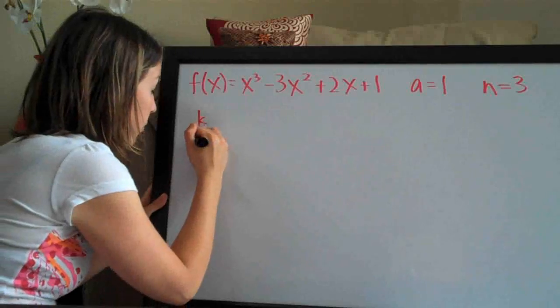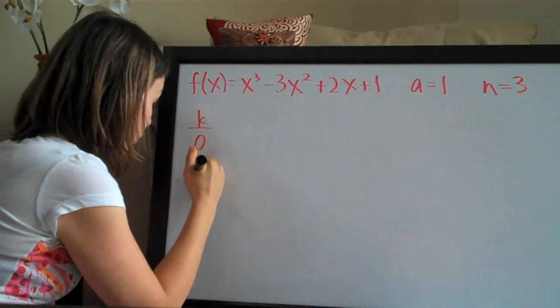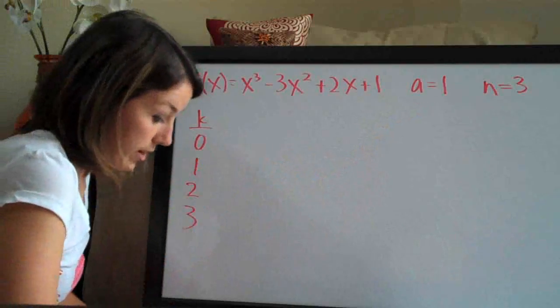We always start with zero, always. So go ahead and write zero, and since it's the third degree, we write one, two, three, down to three because it's the third degree polynomial.